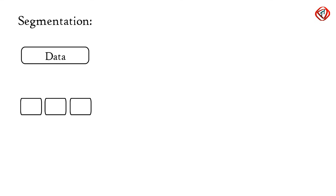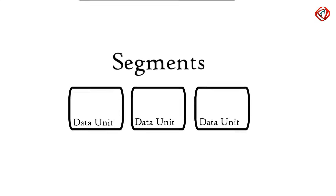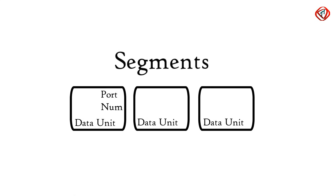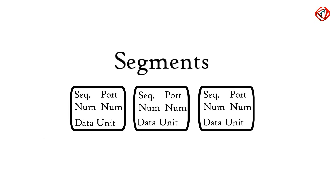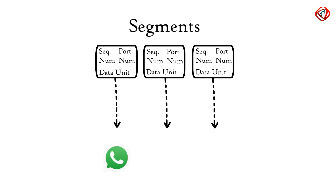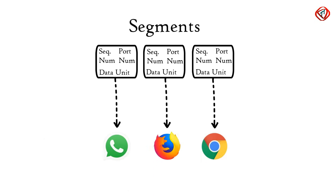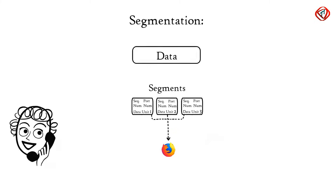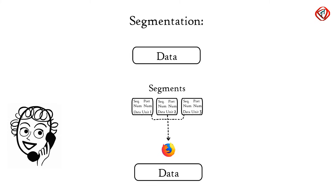In segmentation, data received from the session layer is divided into small data units called segments. Each segment contains a source and destination port number and a sequence number. Port number helps to direct each segment to the correct application, and sequence number helps to reassemble segments in the correct order to form the correct message at the receiver.